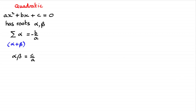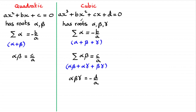I also took you further and showed you that for a cubic equation ax cubed plus bx squared plus cx plus d equals zero, with roots alpha, beta, and gamma, we get a very similar result: the sum of the roots alpha plus beta plus gamma equals minus b over a, the sum of the products of pairs alpha beta plus alpha gamma plus beta gamma equals c over a, and the product of all roots equals minus d over a.